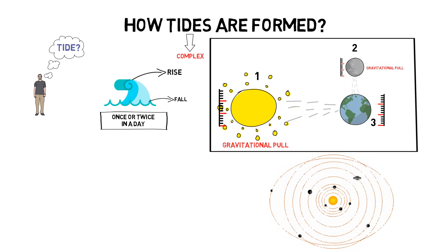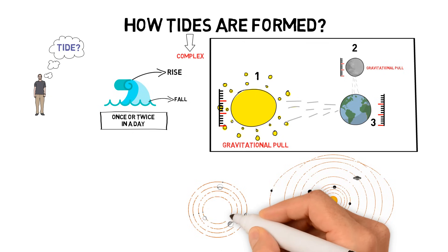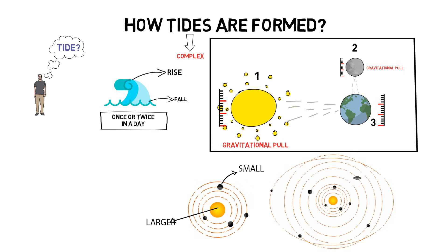That means smaller bodies orbit around the larger one, because the larger body exerts a gravitational pull on the smaller one. I hope so far it's clear.